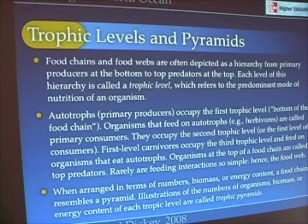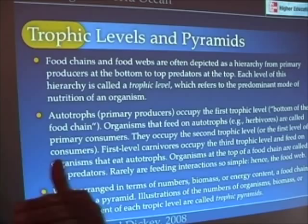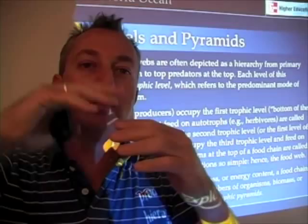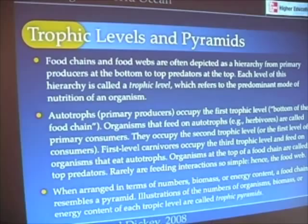As I already said, food chains and food webs are generally depicted as a hierarchy — primary producers at the bottom and other secondary, tertiary, fourth level, fifth level, on up. Each one of those are called trophic levels.